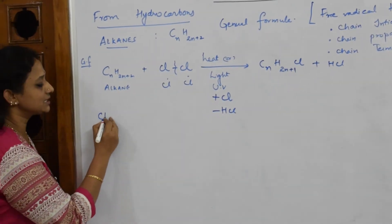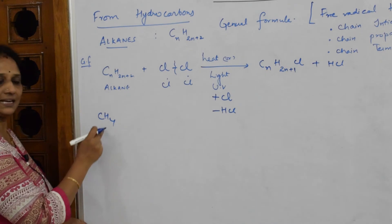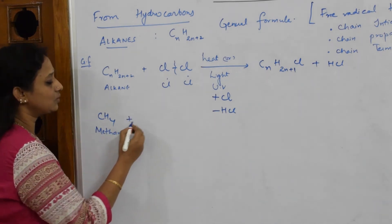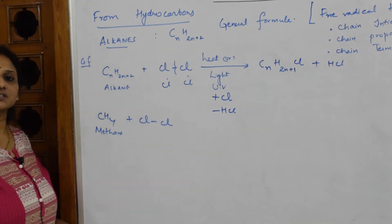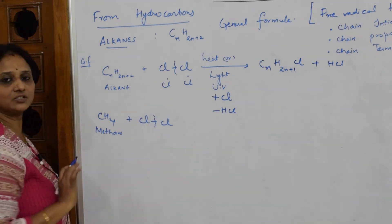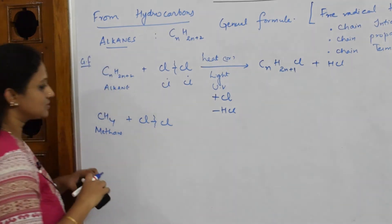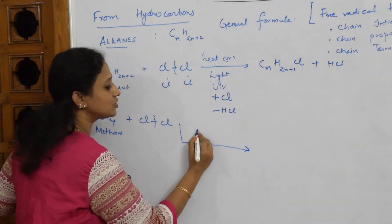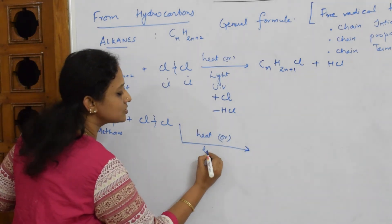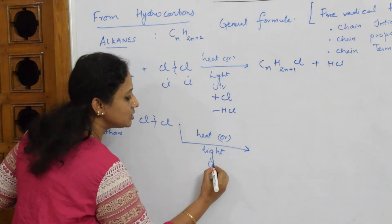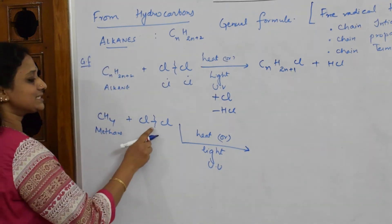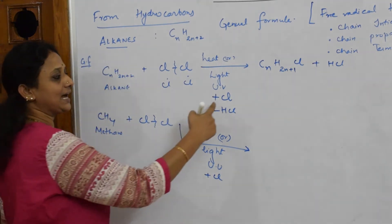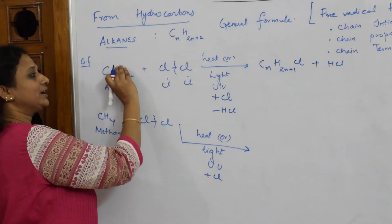Taking the specific example of methane, CH₄, we add Cl₂. The condition is heat or light or UV light. The Cl₂ bond cleaves, one Cl adds to methane, and only one Cl adds — the other part leaves as HCl.